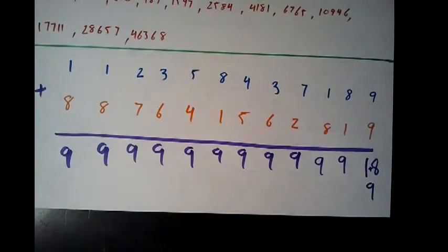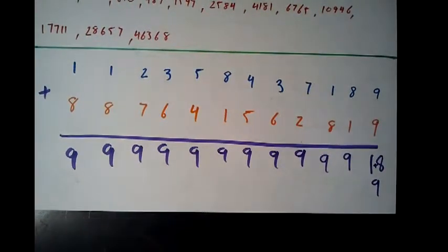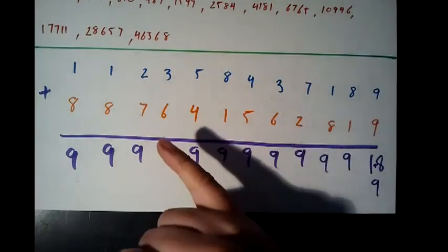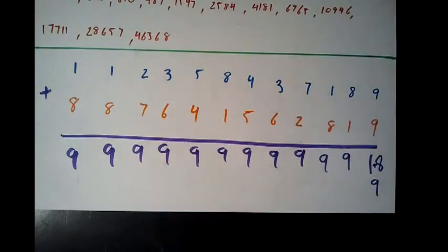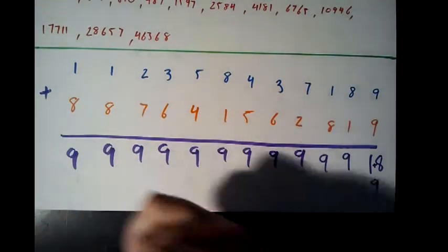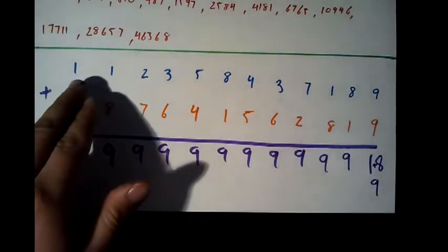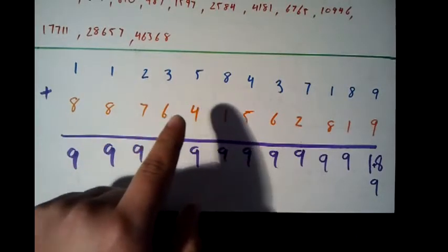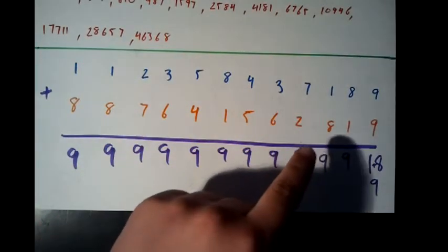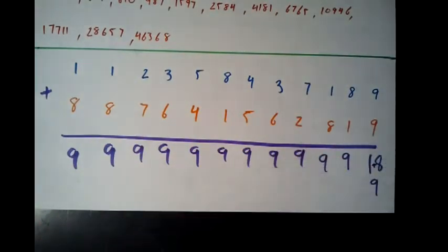It turns out that the numeric reduction of every sequence of 24 Fibonacci numbers sums to 9. What this means is that the numeric reductions form a series of 24 repeating digits — 1, 1, 2, 3, 5, 8, 4, 3, 7, all the way to 2, 8, 1, 9 — and this pattern repeats every 24 Fibonacci numbers. That is a pretty interesting thing.